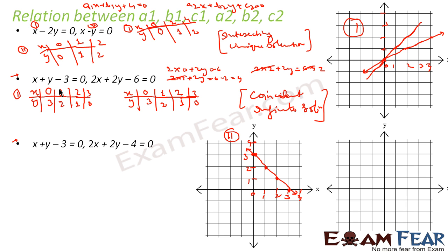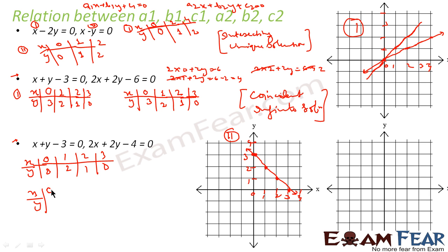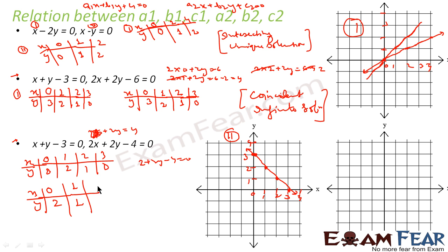Before deriving the relationship, let me find x, y values for this third pair. For x plus y minus 3 equals 0, the values are the same as before: (0,3), (1,2), (2,1), (3,0). For the second equation 2x plus 2y minus 4 equals 0: if x equals 0, y equals 2 (since 2y equals 4). If x equals 1, y equals 1 (since 2 plus 2y equals 4). If x equals 2, y equals 0 (since 4 plus 2y minus 4 equals 0, so y equals 0).